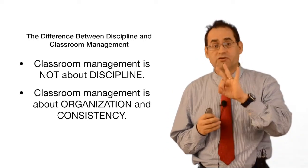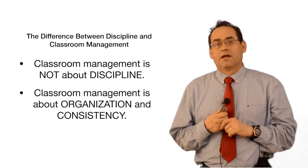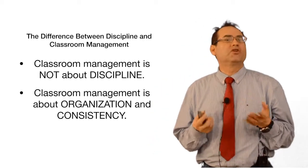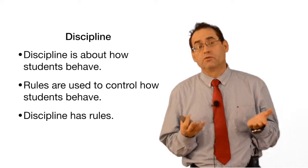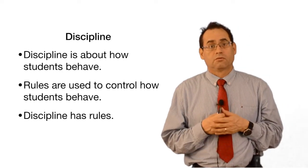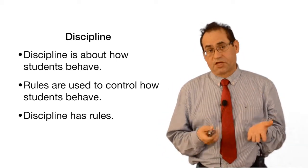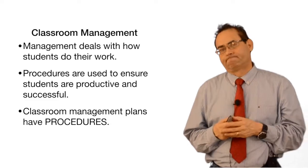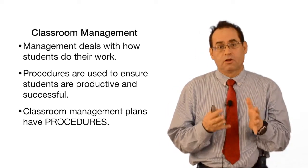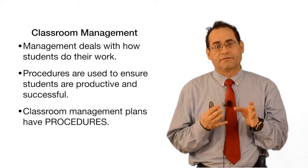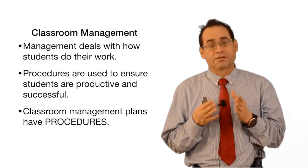There are three factors to be a good teacher: to be firm, to be fair, and to be consistent. Discipline, on the other hand, is about how students behave, and rules are used to control how students behave — we have classroom rules and societal rules that cannot be broken. Discipline has rules; classroom management has procedures. Management deals with how students do their work. The teacher is responsible for setting up all the procedures so students can achieve the goal in class. Procedures are used to ensure students are productive and successful.